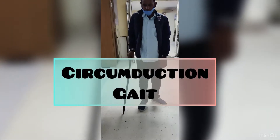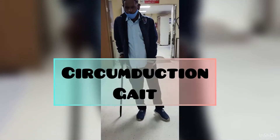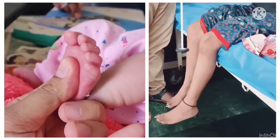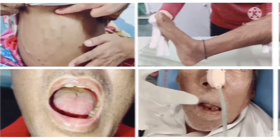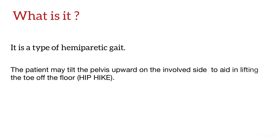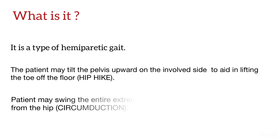Hello friends, in today's video we will talk about Circumduction Gait. It is a type of hemiplegic gait. The patient may tilt the pelvis upwards on the involved side to aid in lifting the toes off the floor. The patient may swing the entire extremity around in a semicircle from the hip, also known as circumduction.